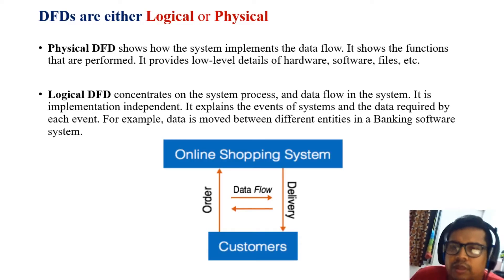For example, data moves between two entities in a bank software system. When we go for any online shopping, the customer usually orders from software or apps, for example Amazon. We search some product and give the order, and after some days the delivery person comes and gives the order to us. That is a two-way system. This is logical DFD.